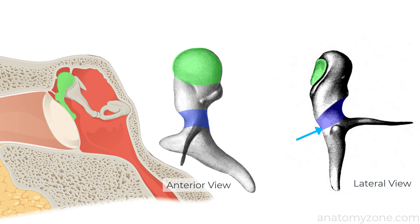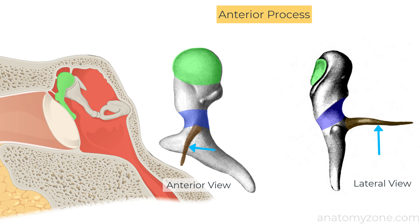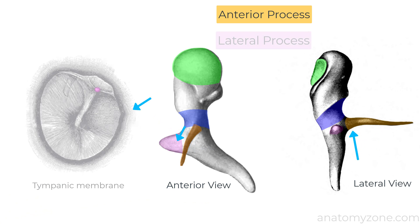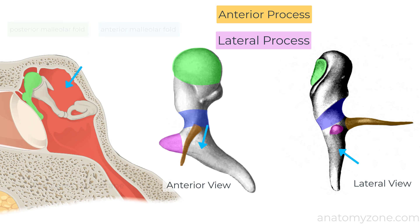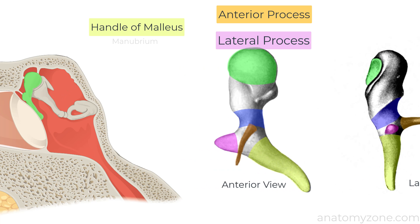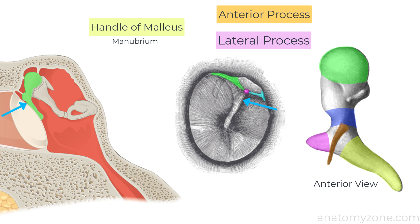Below the neck of the malleus are the anterior and lateral processes of the malleus. The anterior process attaches to the anterior wall of the tympanic cavity and the lateral process attaches to the anterior and posterior malleolar folds of the tympanic membrane. The inferior extension of the malleus below the anterior and lateral processes is known as the handle of the malleus or the manubrium, which attaches to the tympanic membrane along the length of its lateral margin with its tip at the umbo.